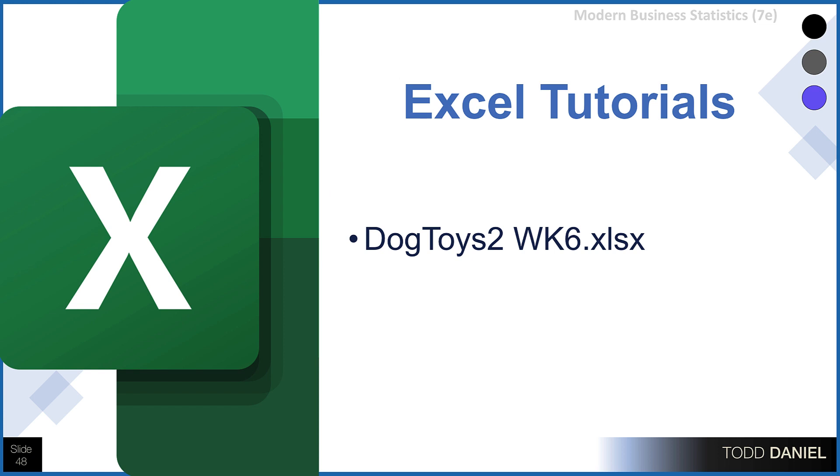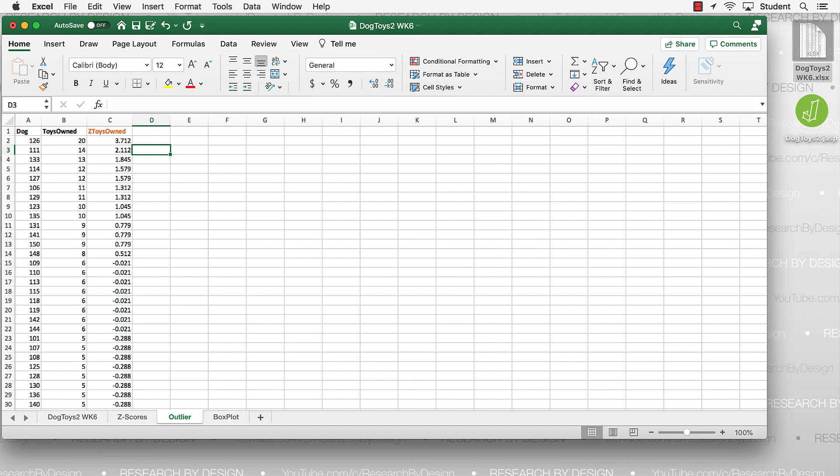So now that we know what is a five number summary and a box plot, let's turn to Excel for a tutorial about how to create these values. I will continue using the Dog Toys 2 Week 6 Excel file. For this example, let's go to the Box Plot tab.